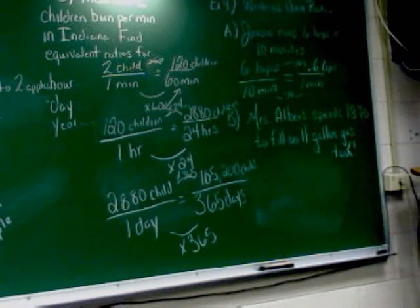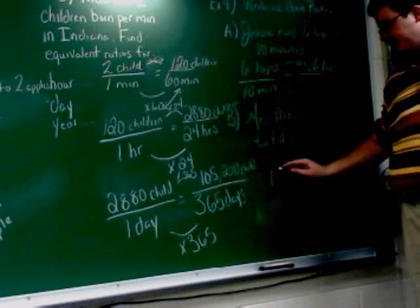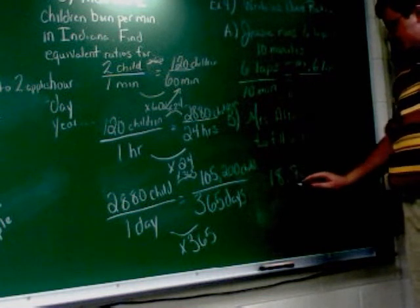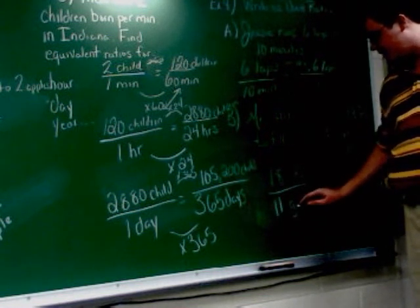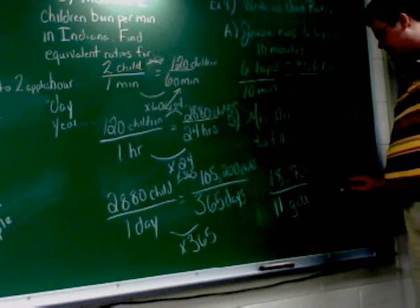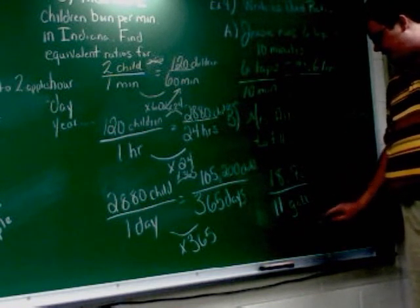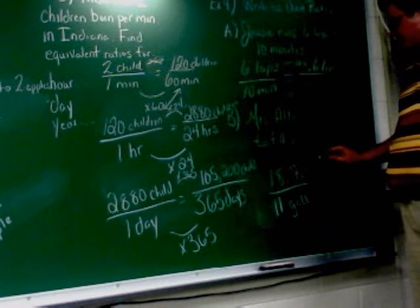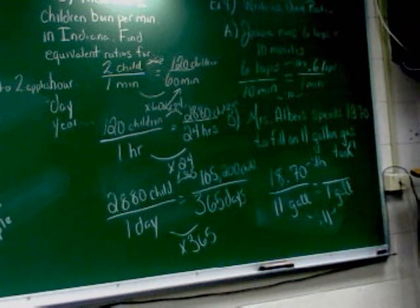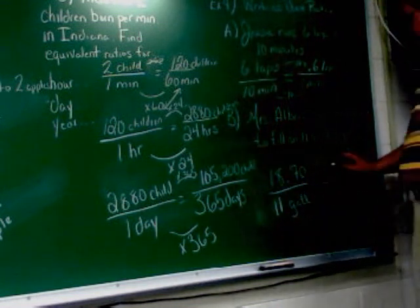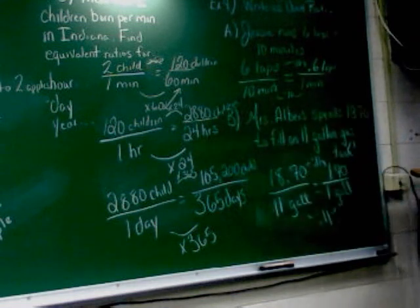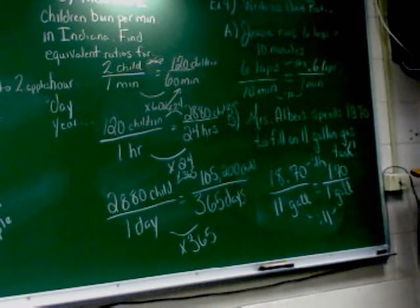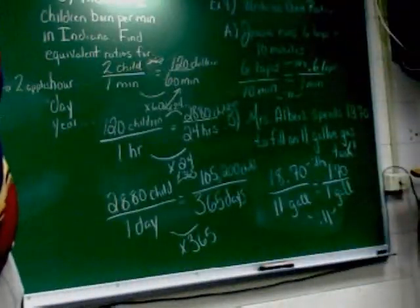This example will show you how old these notes are. Ms. Albers spends $18.70 to fill an 11-gallon gas tank. So $18.70 over 11 gallons. I want to know about one gallon, which means I have to divide by 11. And when I take $18.70 and divide it by 11, I get $1.70. So it's going to cost you $1.70 for one gallon. Don't we all wish?